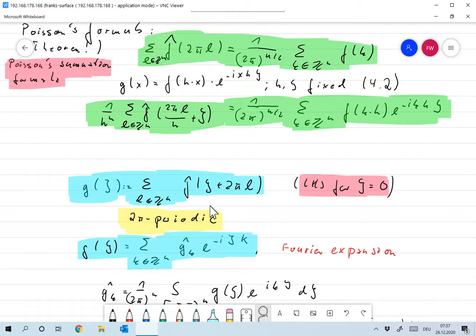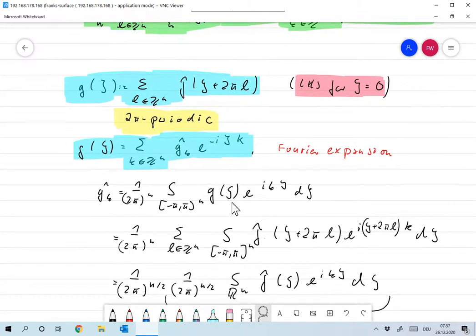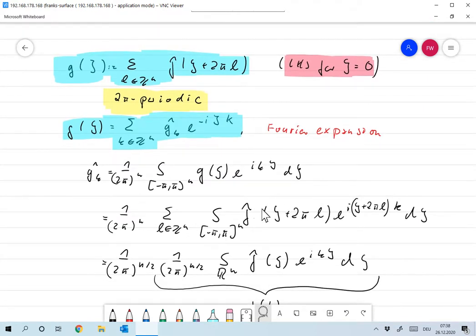So we can take its Fourier expansion as a Fourier series, and we can write it in the form g of ξ, a sum of all K in Zn. Again, if you don't like that, take N equals to 1, it doesn't make a difference. gk hat e to the minus iξk. Okay, and the Fourier coefficients are readily computed as gk hat, which is 1 over 2π to the N into minus π π to the N, g of ξ e to the ikξ dξ. Just the normal form for the Fourier coefficients.